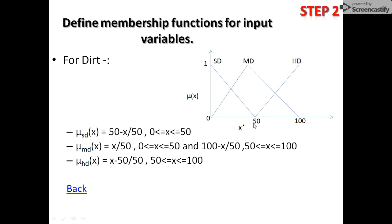For the first triangle, the membership function is calculated using the rule: forward minus backward divided by forward minus backward. Specifically, the descending side is (50 − x) / (50 − 0), with x in the range [0, 50]. The ascending side of the middle triangle is (x − 0) / (50 − 0), range [0, 50]. For the descending side of the middle triangle: (100 − x) / (100 − 50), range [50, 100]. For the third triangle's ascending side: (x − 50) / (100 − 50), range [50, 100].